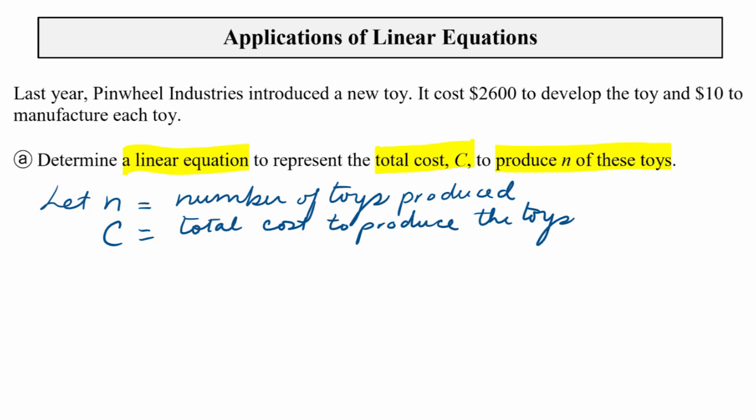So that gives us an idea that the n is kind of taking the place of our x, so it's our input variable, and that C is our y or output variable. We need an equation, and it's linear. So we know that linear equations, one of the way to write linear equations, is in slope-intercept form.